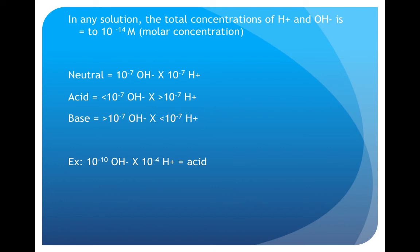For example, 10 to the minus 4 hydrogen ions and 10 to the minus 10 hydroxide ions is an acid. Remember, negative 4 is a higher number than negative 7. So when the hydrogen ions go from negative 7 to negative 4, they increase. When the hydroxide ions go from negative 7 to negative 10, they decrease.